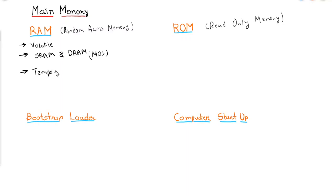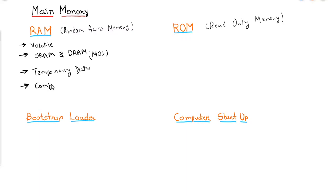RAM is used for temporary data. For example, when the CPU is processing instructions or data and generates results that it cannot store internally, it transfers that data into RAM for use as required. The implementation of RAM uses both combinational circuits and sequential circuits.